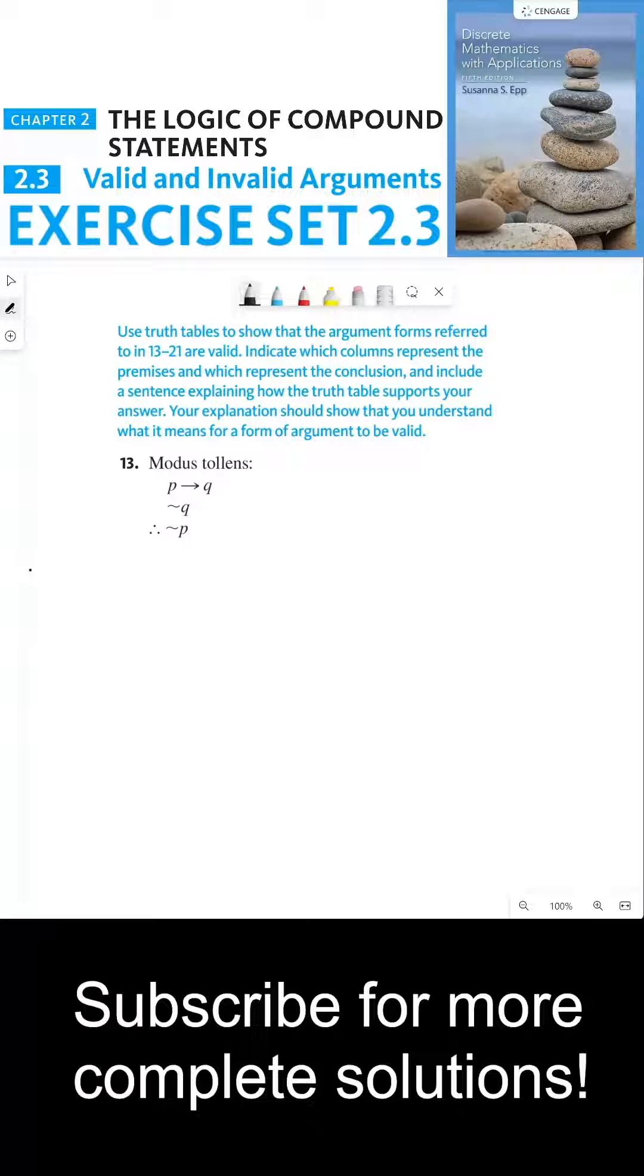Okay, so let's start by making the truth table. We need to create three statement forms: P implies Q, not Q, and not P.